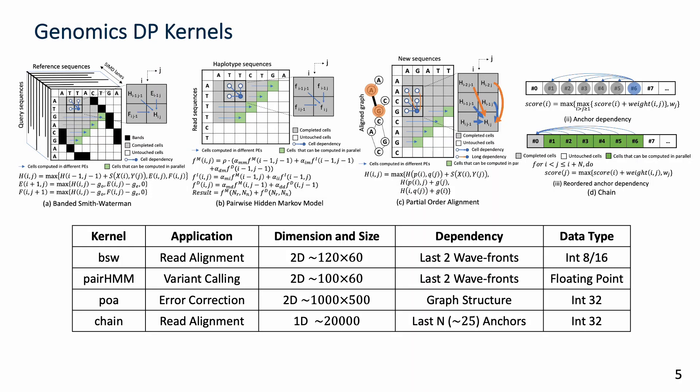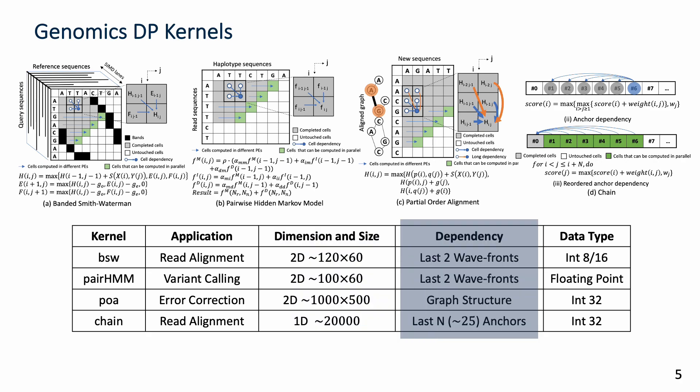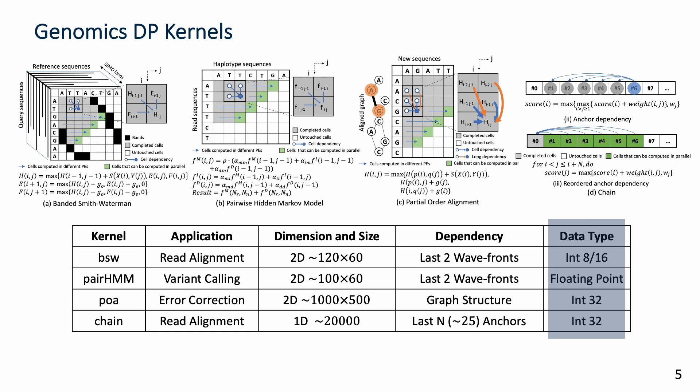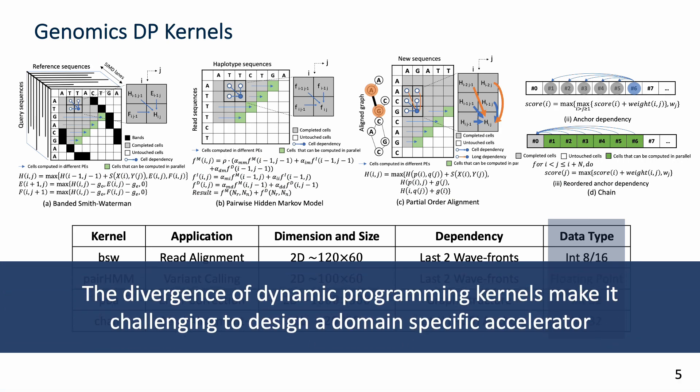However, the representative GenomicsDP kernels have very different characteristics: their DP tables have different dimensions and size. They have different dependency patterns, different objective functions, and preceding requirements.